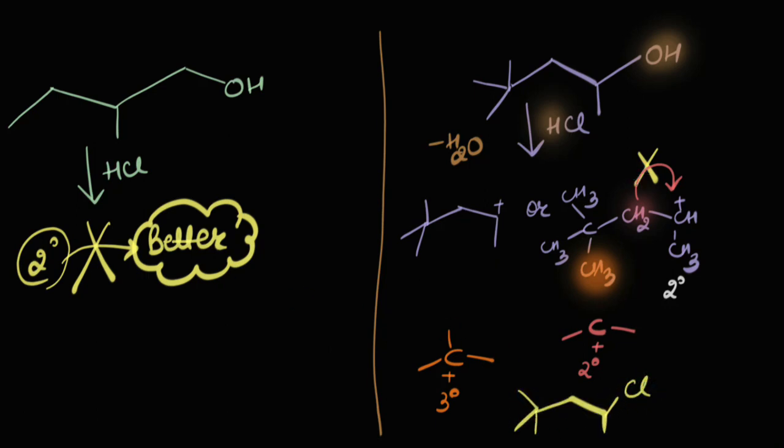What I'm trying to tell you folks here, is that a carbocation will undergo rearrangement if and only if it has a possibility to become a better carbocation. A 2 degree carbocation is not going to rearrange and form another 2 degree carbocation, hoping of getting something better later.